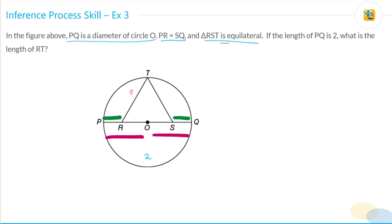So there's quite a bit of information given here. Let's understand the information once again. PQ is a diameter, PO is equal to OQ. Let's label this information as A. PR is equal to SQ. Label this as B. And this one as the equilateral triangle.